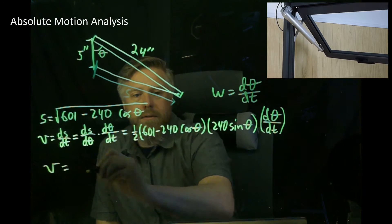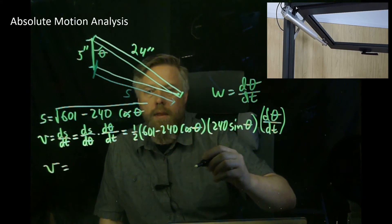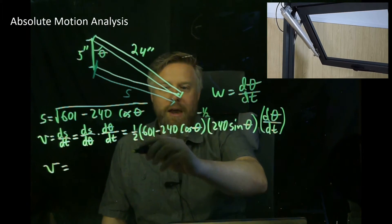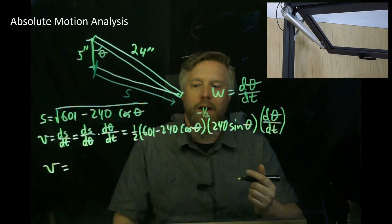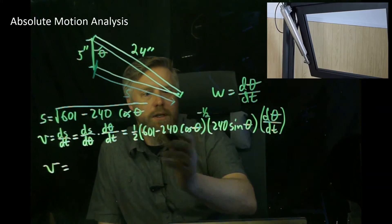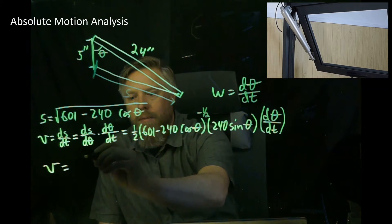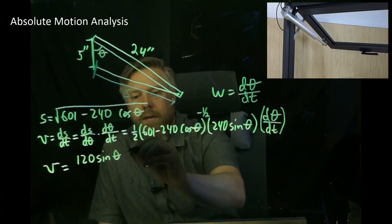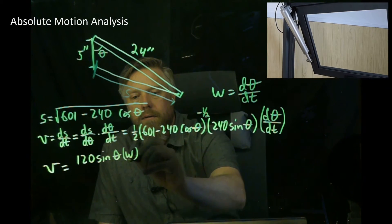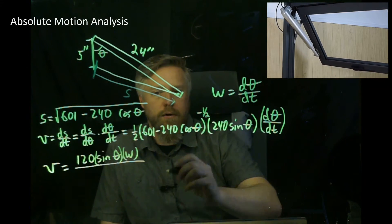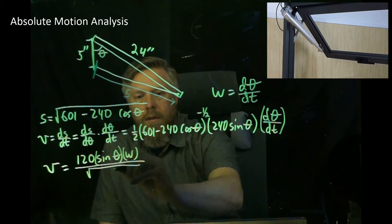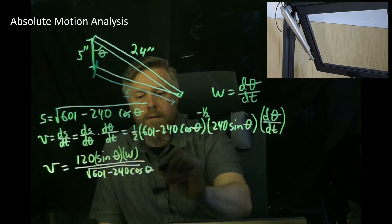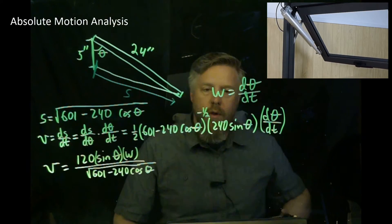We're just going to plug it in and clean a few things up. We get velocity equals—ah, I forgot my negative one-half. We brought down the one-half power and then subtract one from the power, so we need the negative one-half. v equals—we got 240 on top, 2 on bottom—120 sine theta times omega, all over the square root of 601 minus 240 cosine theta. We've reached our goal.